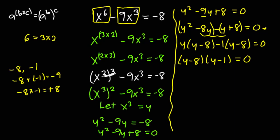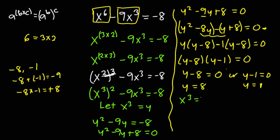When you have a situation like this, y minus 8 is either equal to 0 or y minus 1 is equal to 0. So if y minus 8 equals 0, then y gives us 8. And over here, y gives us 1. We've already established that x cubed equals y, so I'm going to equate these two values to x cubed.